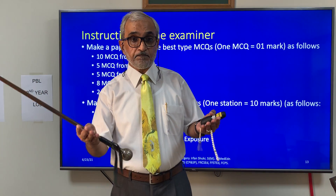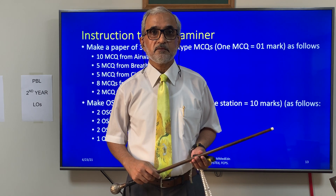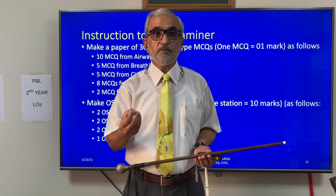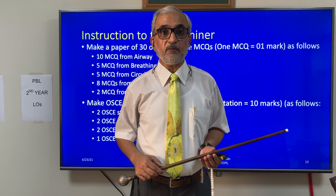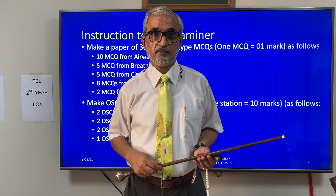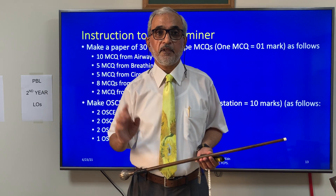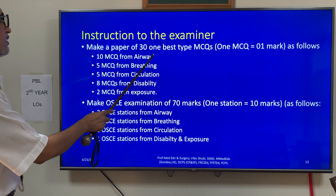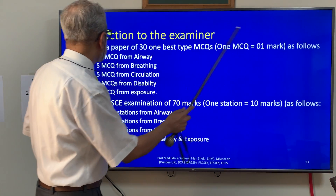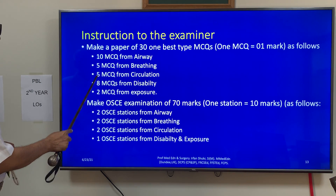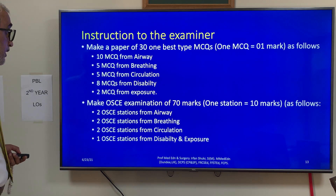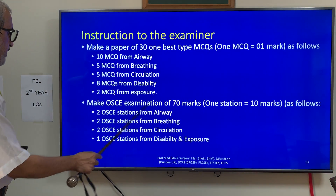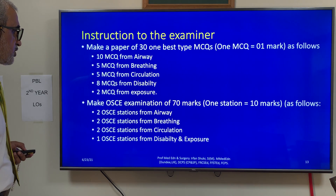However, giving this full blueprint to the examiners who will set the paper would be very problematic. We need to simplify it. When the paper setter comes to set the paper, we give them a Word document with clear instructions: make a paper of 30 one-best-type MCQs at one mark each, as follows — 10 MCQs from airway, 5 from breathing, 5 from circulation, 8 from disability, 2 from exposure. Then make an OSCE examination of 70 marks, with seven stations of 10 marks each, as follows — 2 from airway, 2 from breathing, 2 from circulation, 1 from disability, and 1 from exposure.